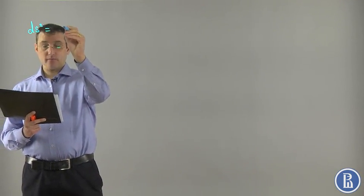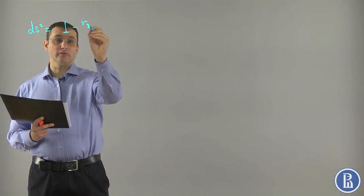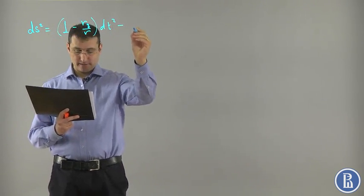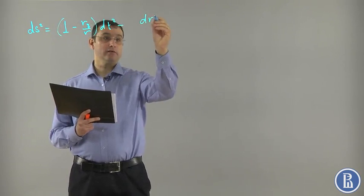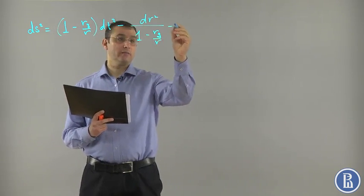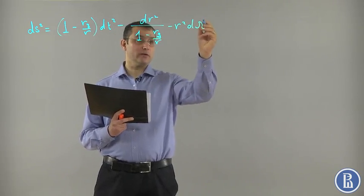So, we have obtained the following solution of the Einstein equations: 1 minus Rg divided by R dt squared minus dr squared divided by 1 minus Rg divided by R minus R squared d omega squared.